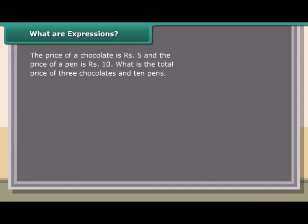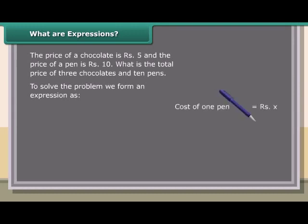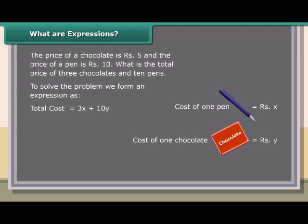What are expressions? The price of a chocolate is rupees 5, and the price of a pen is rupees 10. What is the total price of 3 chocolates and 10 pens? To solve this problem, we form an expression: cost of 1 pen equals rupees x, cost of 1 chocolate equals rupees y, cost of 3 chocolates equals 3y, cost of 10 pens equals 10x. Total cost equals 3x plus 10y, which equals 3 into 5 plus 10 into 10, which equals 15 plus 100, which equals 115 rupees.